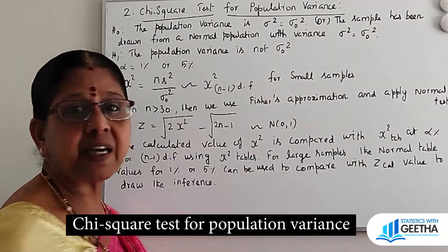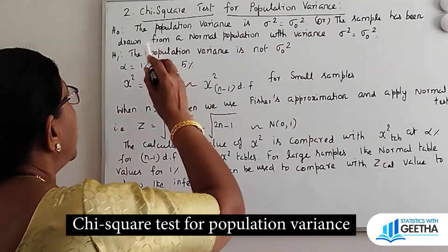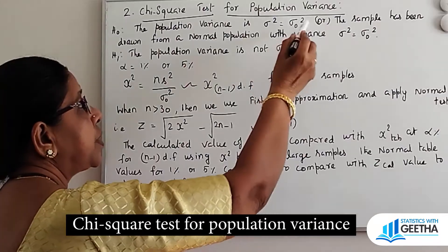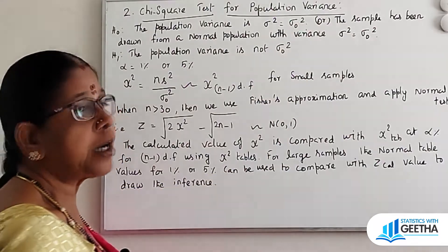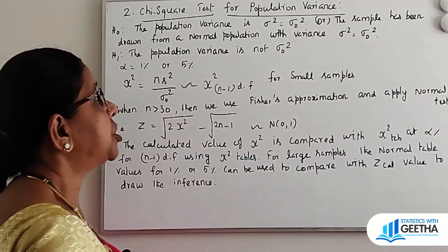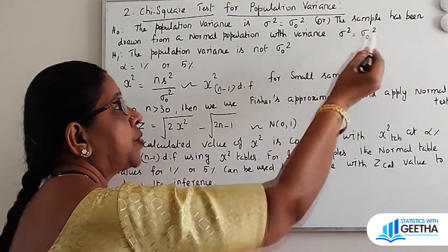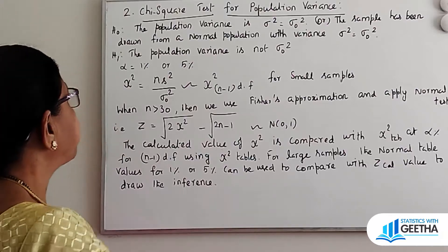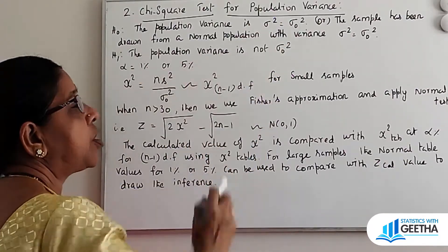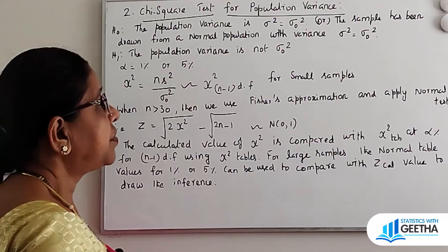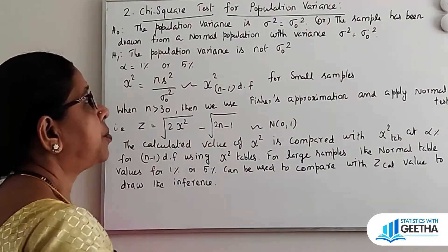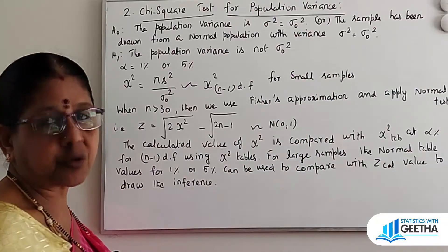Now I am going to review the skeleton of the test. H naught: the population variance sigma square is equal to sigma naught square, or H naught meaning the sample has been drawn from a normal population with variance sigma square equal to sigma naught square. H1, the alternative: the population variance is not sigma naught square, or the sample has not been drawn from a normal population with variance sigma naught square.